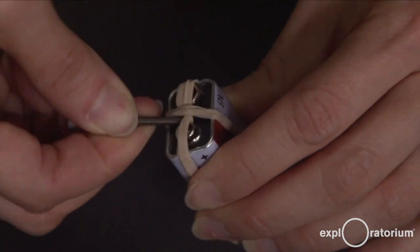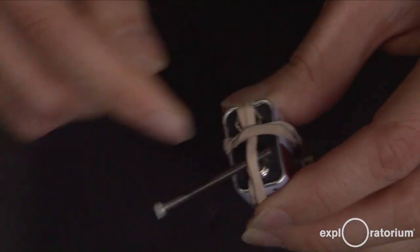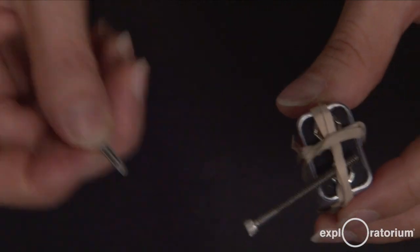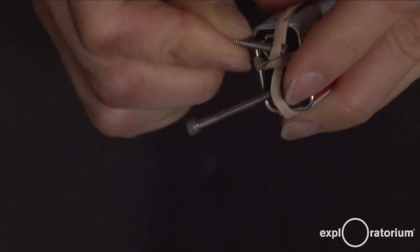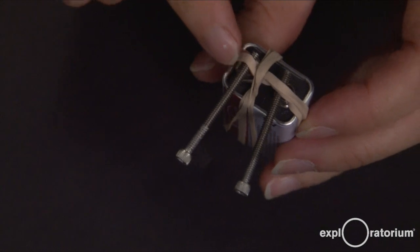Take one screw and tuck it under the rubber band so that it's touching one of the terminals. Take the other screw and tuck it under the rubber band so that it's crossing the other terminal. And this is your electrolysis device.